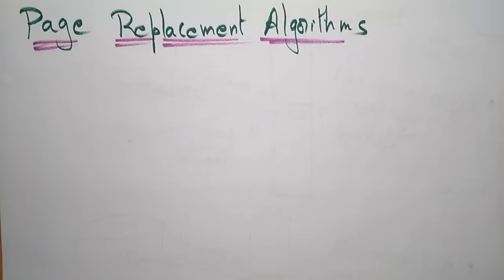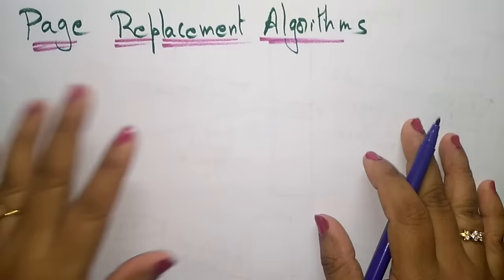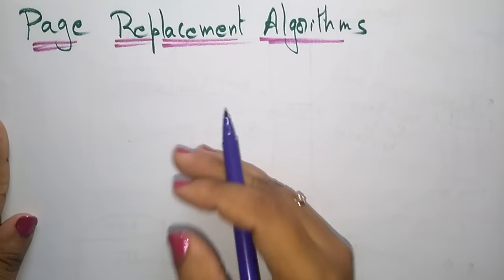Welcome back. Coming to the next topic: page replacement algorithms. Page replacement algorithms are used to decide which frame has to be replaced, and which replacement algorithm shows the lowest page fault rates. This page replacement algorithm decides which memory page will be swapped out when a page of memory needs to be allocated.